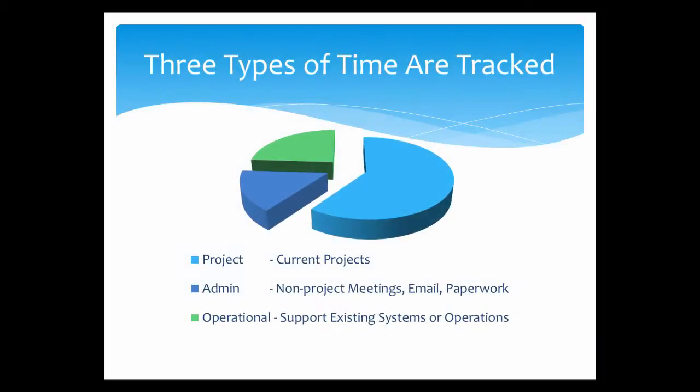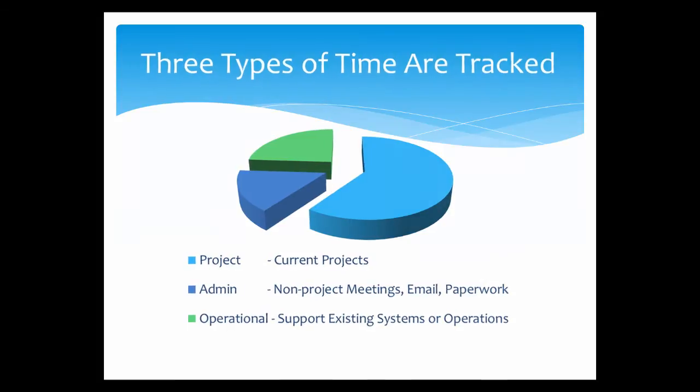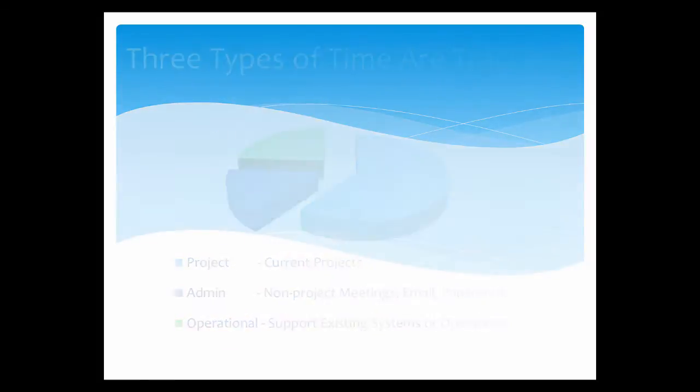Three types of time are tracked in ATTASC: project time for current project tasks and issues, admin time for non-project meetings, email, and paperwork, or operational time for time spent supporting existing systems or operations.